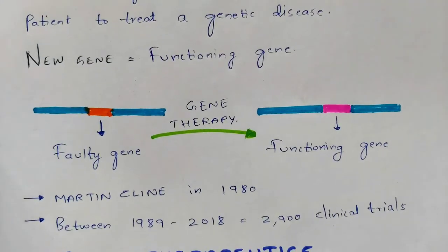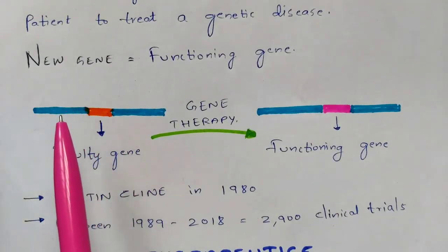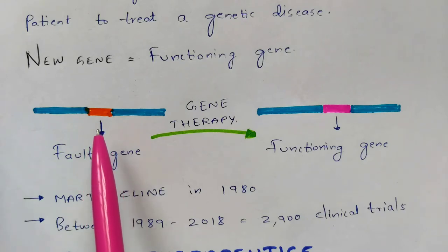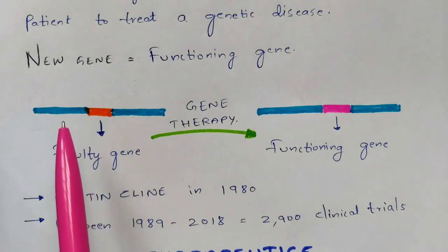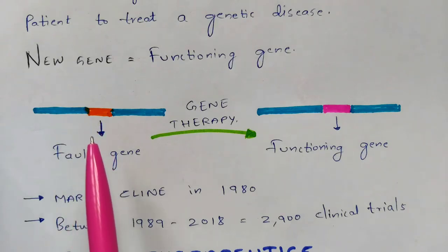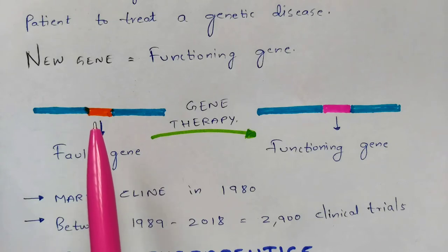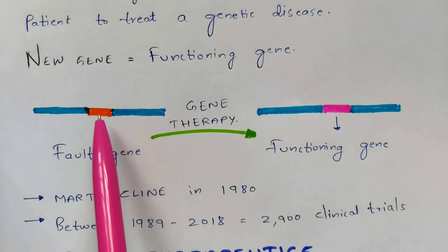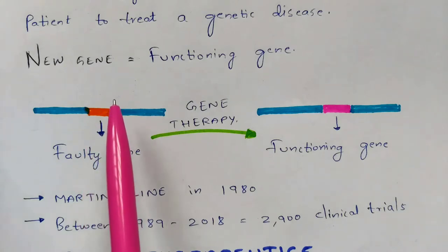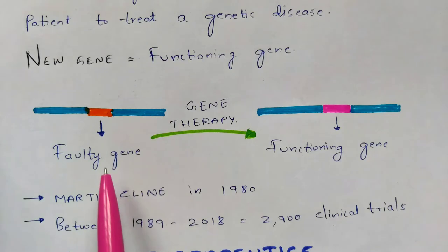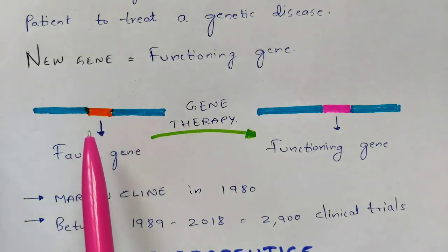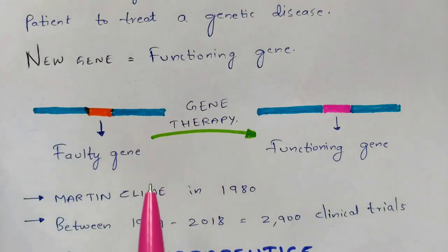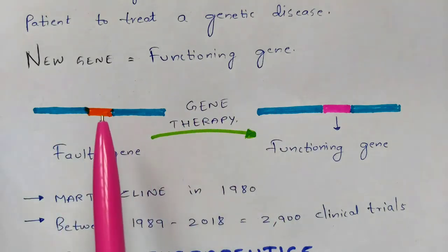Let us take a patient who has a faulty gene and is suffering from a particular genetic disorder. We are going to isolate the DNA — the particular faulty gene present in the chromosome. Once the gene is isolated, we identify it, remove it, and then attach a functioning gene to the DNA. That process is called gene therapy.